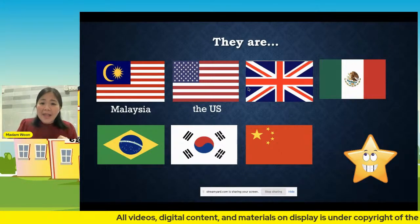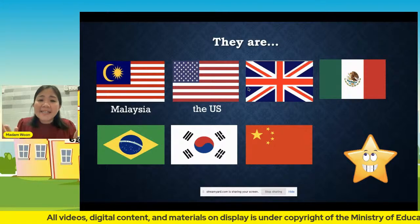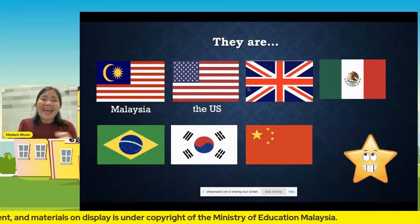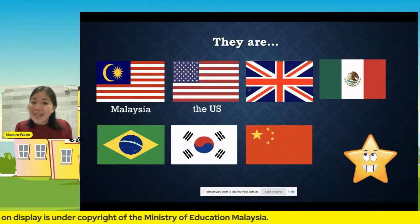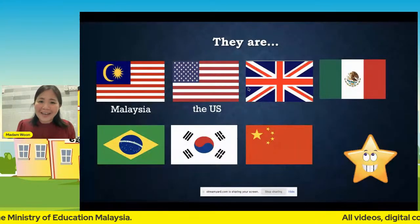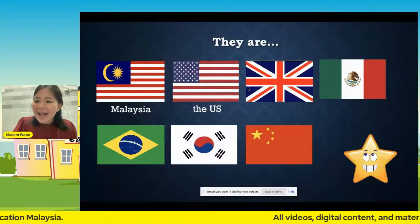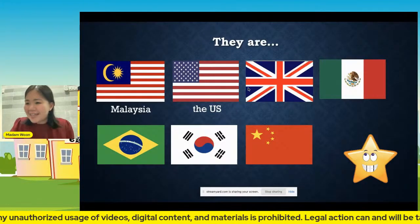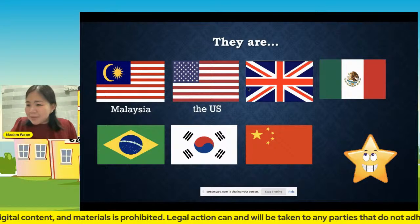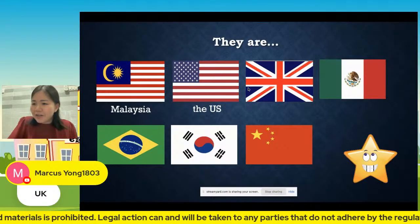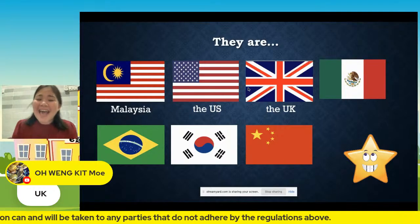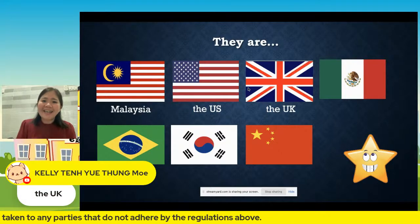How about the third one — what flag is this? This is a country where Queen Elizabeth and Prince William are from. Very good — this is the United Kingdom, the UK.